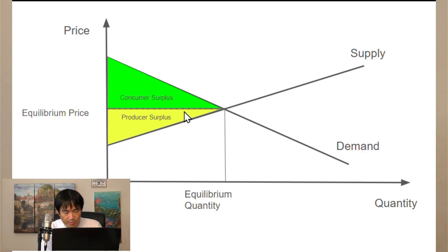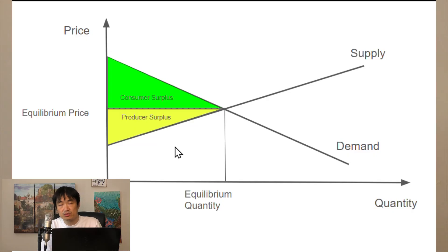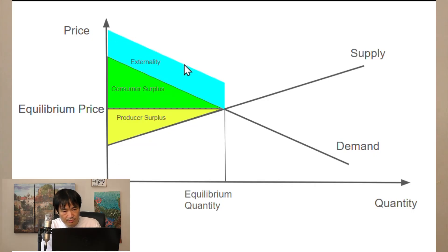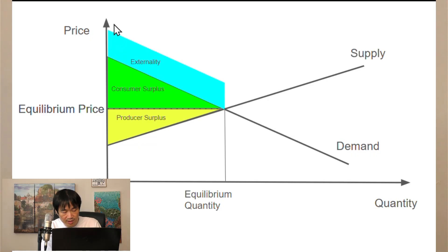Now, what if this product creates some additional benefit to other members of society? Like schools that spread knowledge, trees that create oxygen, or bridges that people can cross for free — basically anything that creates externalities. Sometimes we also call them non-excludable goods, because you can't exclude non-paying people from enjoying them. So because of the externality, the total benefit of this product is not just the consumer and producer surpluses, but also includes a parallelogram representing externalities. Each unit of the product produces this much externality, and when you add up all the units, it will be this entire area.